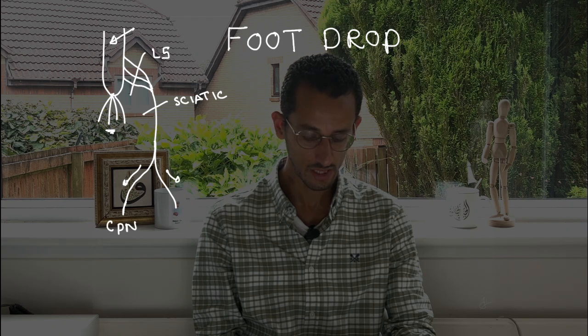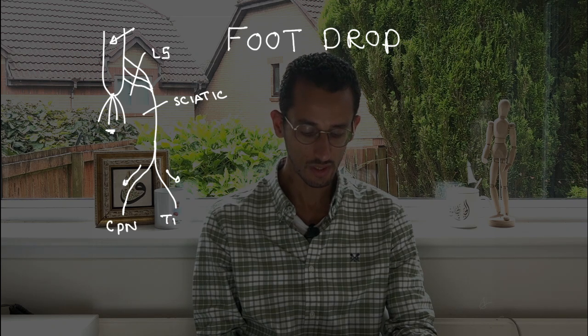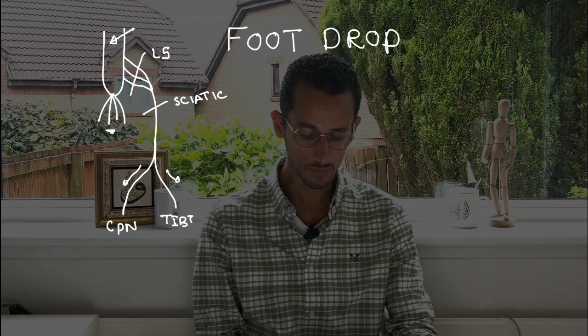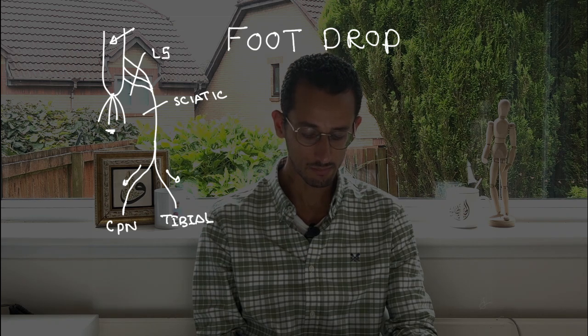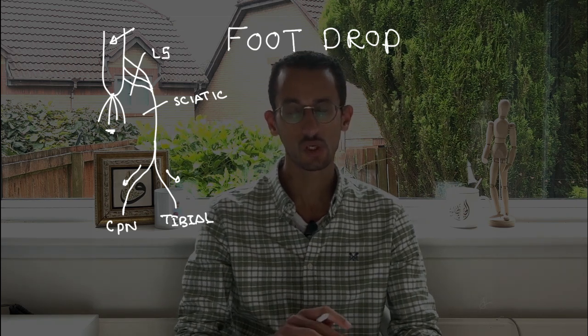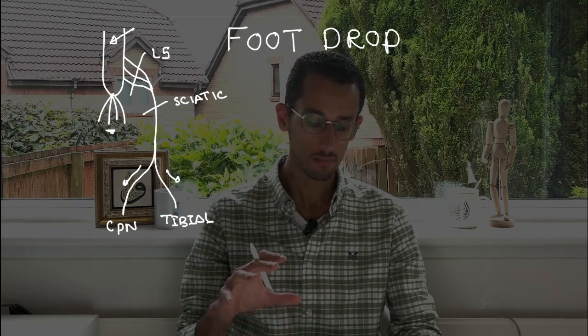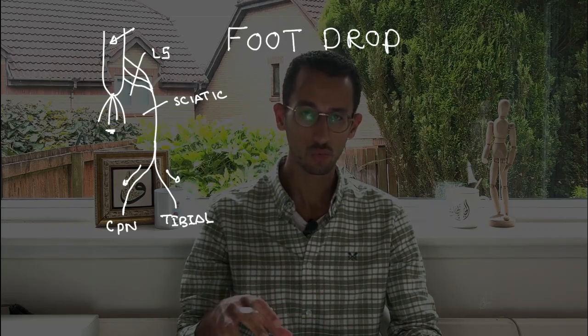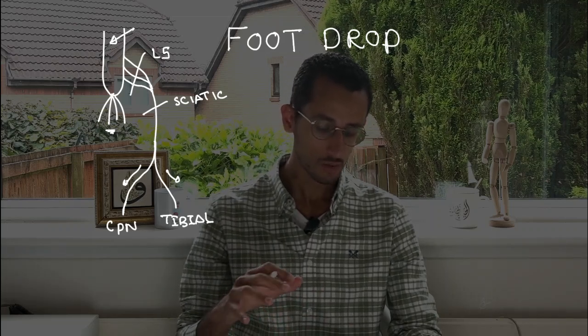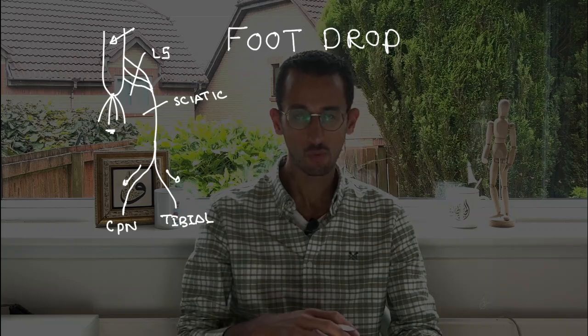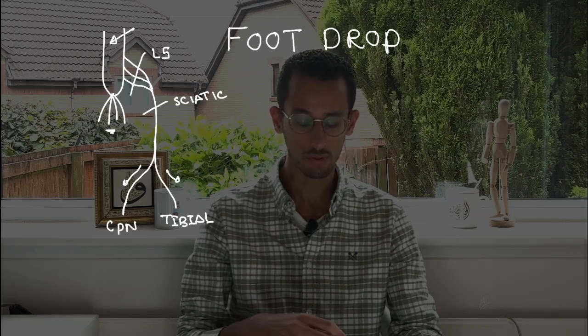One is the common peroneal nerve and the other one is the tibial nerve. I'm talking about those branches because those are really essential to understand the mechanism or the potential cause for foot drop. So any of those can be involved and lead to foot drop somehow.